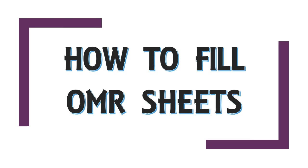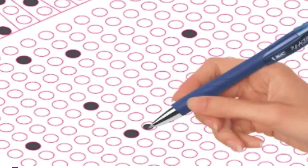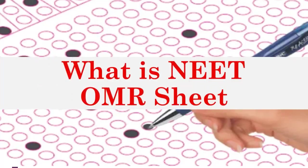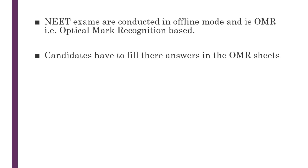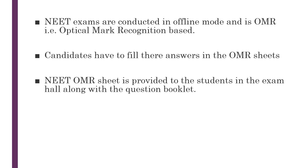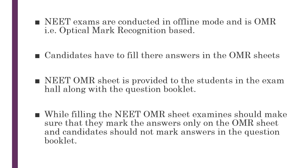We'll cover how to answer OMR sheets and what exactly they are. The most basic but important question is: what is the NEAT OMR sheet? NEAT exams are conducted in offline mode and it is an Optical Mark Recognition based paper — a pre-printed paper which contains bubbles for each option in your question paper, and you need to fill in the bubble with the option of your choice. The NEAT OMR sheet will be provided to students in the exam hall along with the question booklet. Make sure you mark the answer only in the OMR sheet, not in the question booklet.